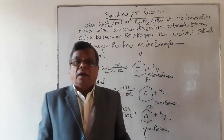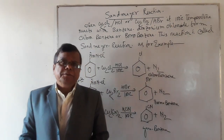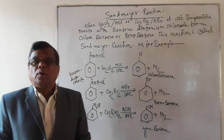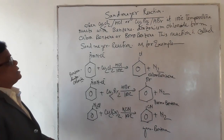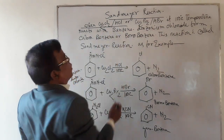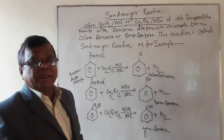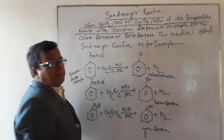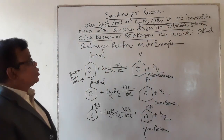Today I shall discuss a very important reaction for the preparation of chlorobenzene, bromobenzene, and cyanobenzene from benzene diazonium chloride. This reaction is called the Sandmeyer reaction. The Sandmeyer reaction is when cuprous chloride and hydrochloric acid, or cuprous bromide and hydrobromic acid, at 100 degrees Celsius reacts with benzene diazonium chloride to form chlorobenzene or bromobenzene.